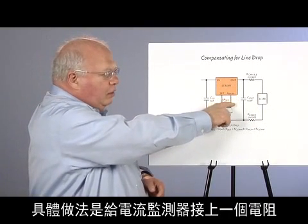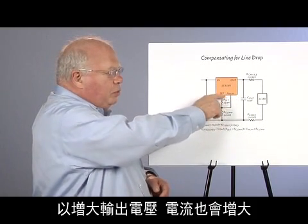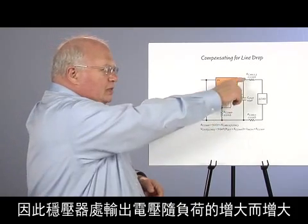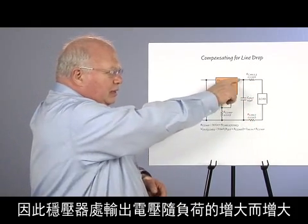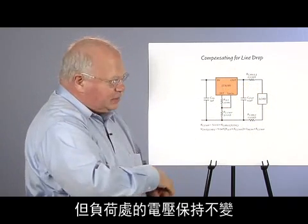What we do is we feed the current monitor through a resistor that boosts up the output voltage as the current goes up. So, as the load increases, the output voltage at the regulator goes up, but the voltage at the load stays constant.